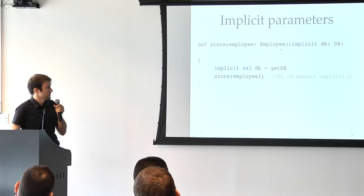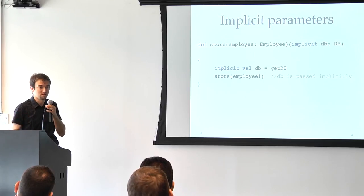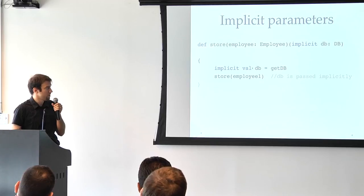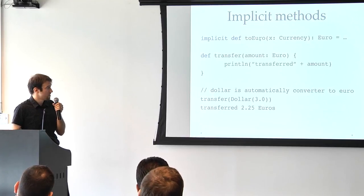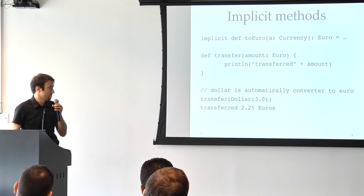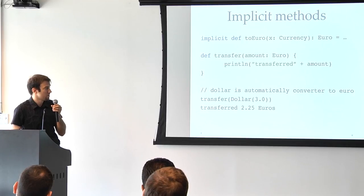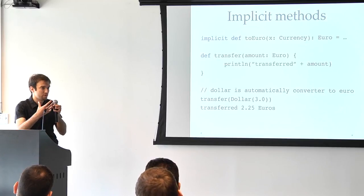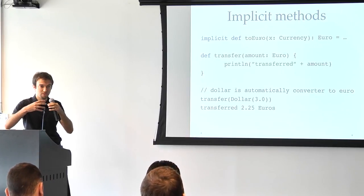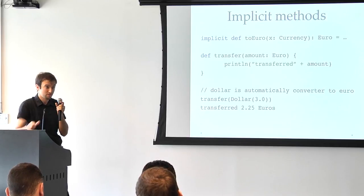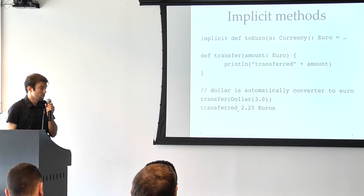We have implicit parameters that allow us to basically inject some parameter values implicitly without adding a lot of boilerplate to the code. In this case, if we want to store some value in the database, we do not want to pass the database to every method call because it's redundant and it's implied from the context. So all we need to do is create the DB and mark it with implicit, and the compiler is going to inject the DB. Implicit methods allow us to basically implicitly convert values between types. In this case, if we have a transfer function that expects to get a euro, and we invoke it with the dollars, we do not want to write the conversion explicitly every time. In this case, if we define this implicit conversion in the scope, the compiler will just infer it. It will infer the fact that it will need to inject this conversion. You need to use it carefully, though.